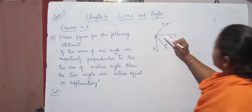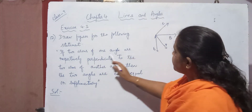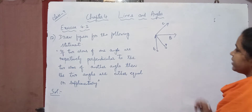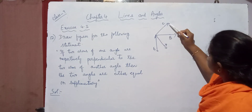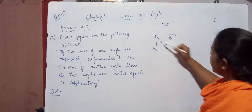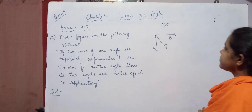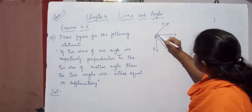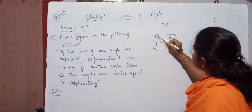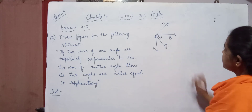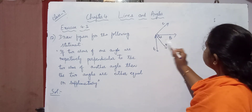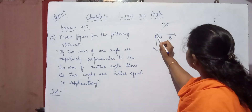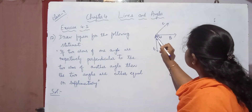Given that two arms of one angle are respectively perpendicular to the two arms of the other angle. So here, AC is the first arm of the first angle and AD is the first arm of the second angle. These two arms are perpendicular, that is 90 degrees — it is given. And also the second arm AB is perpendicular to AE, so these two are also 90 degrees. This is given.